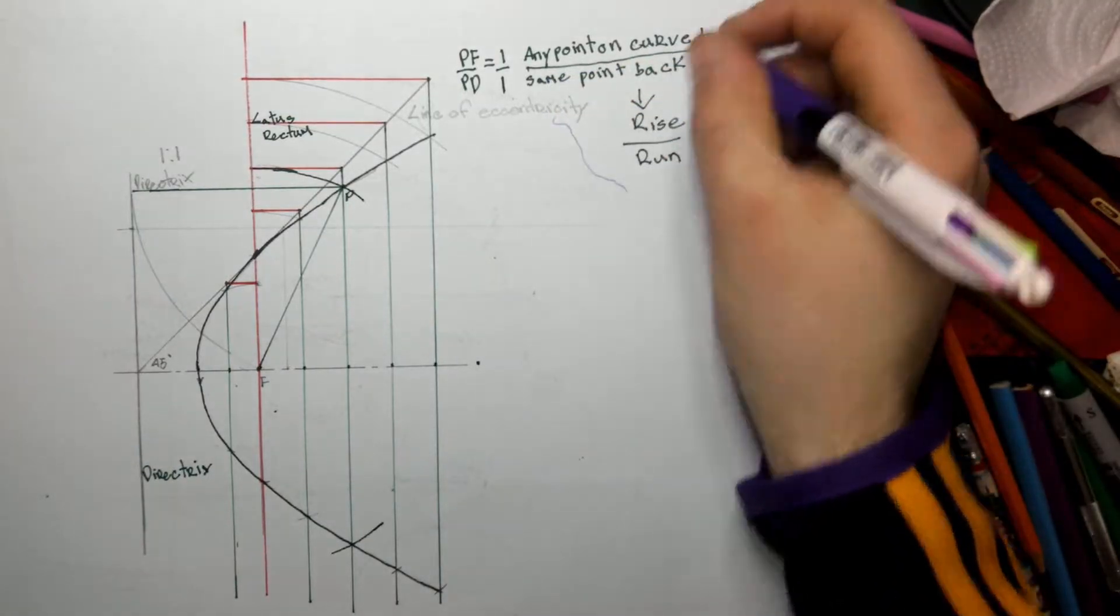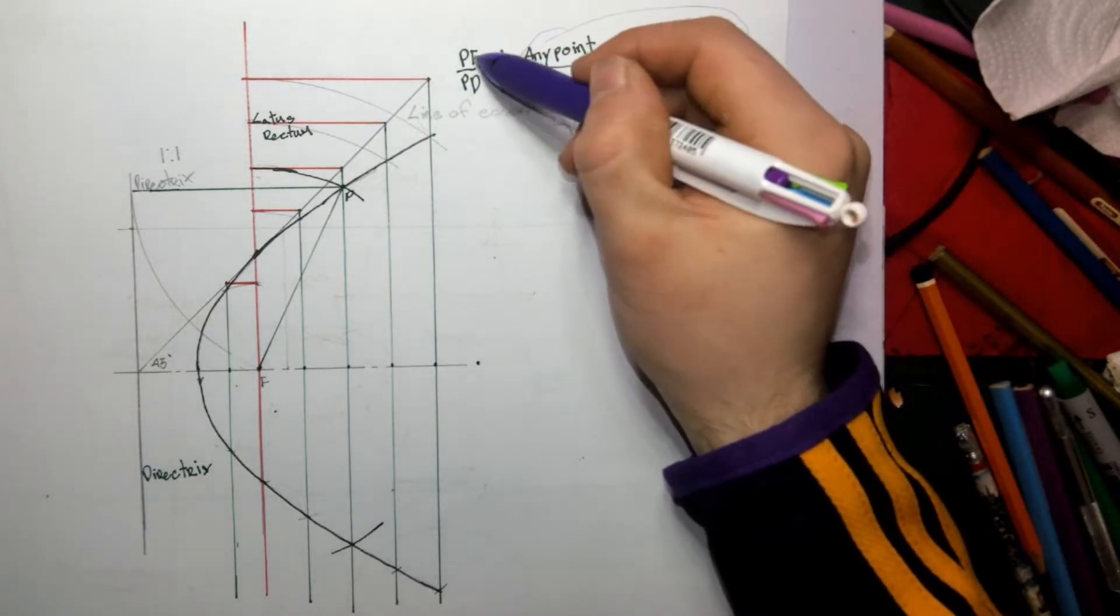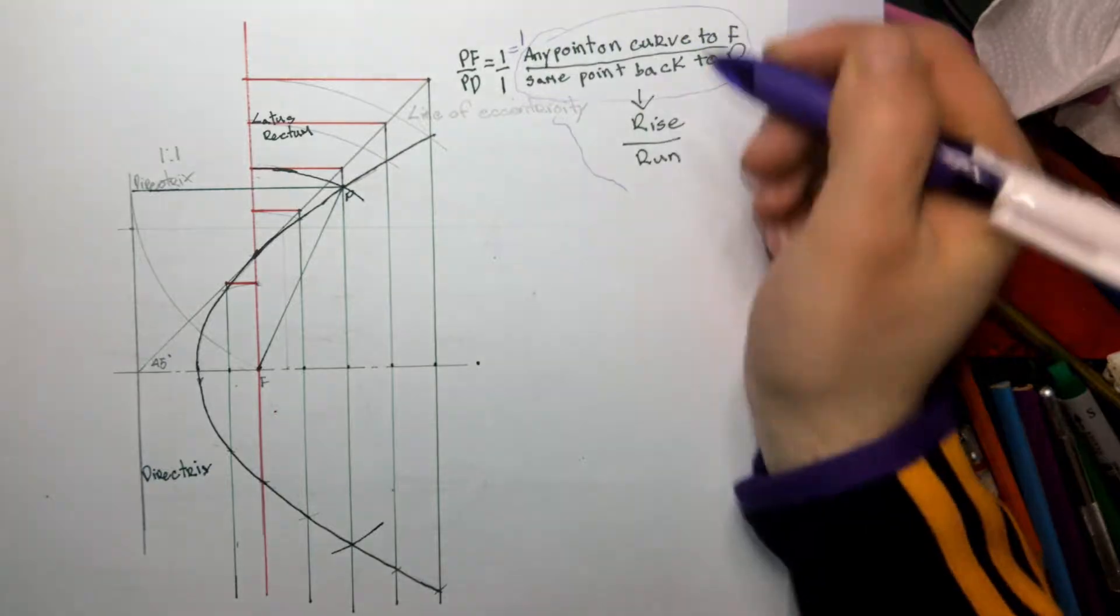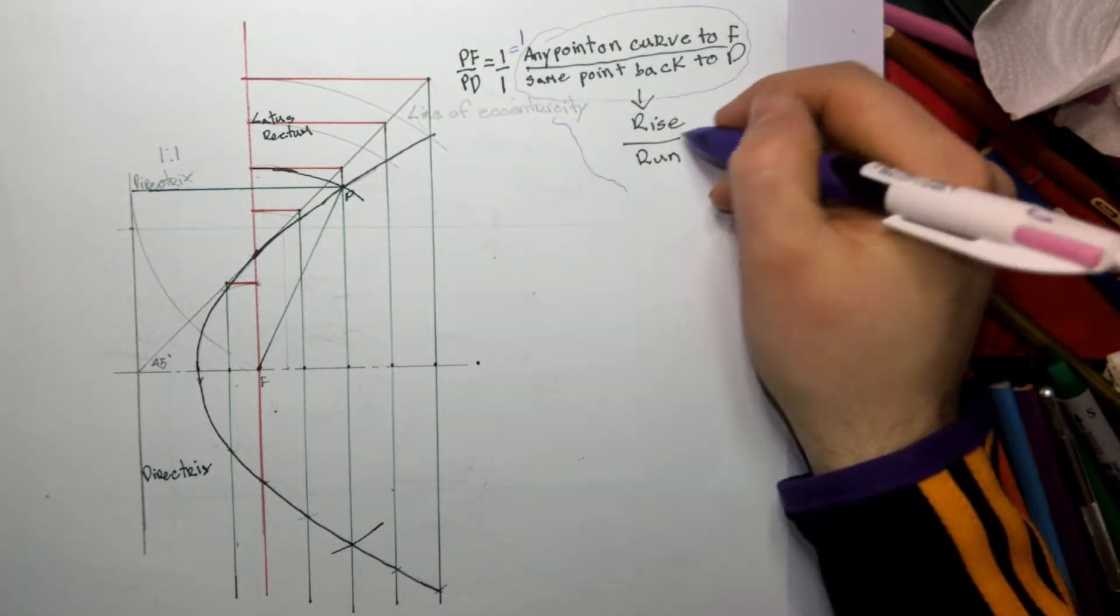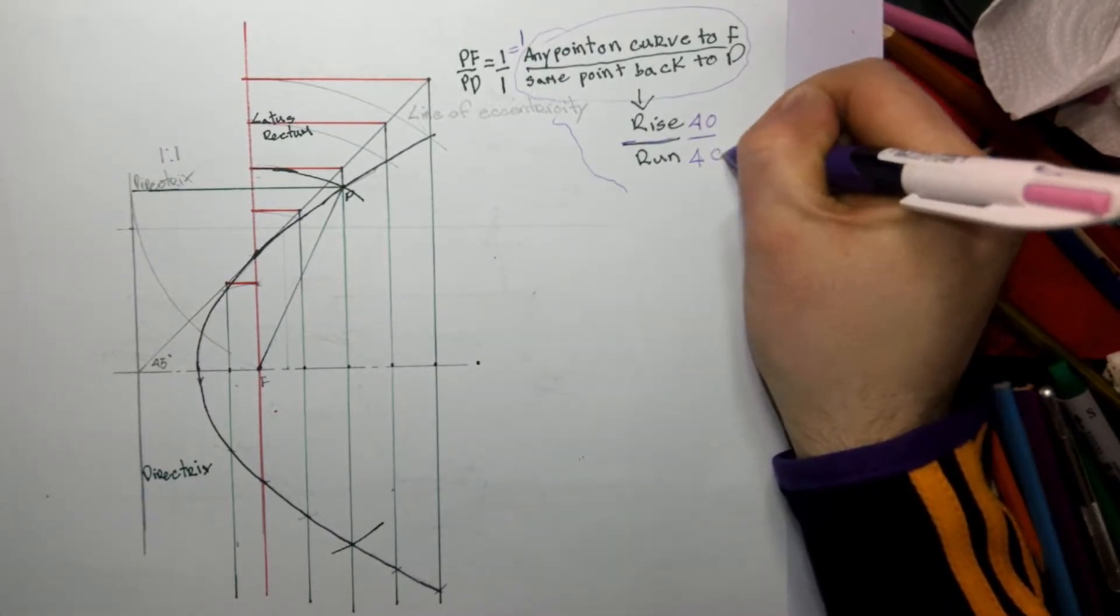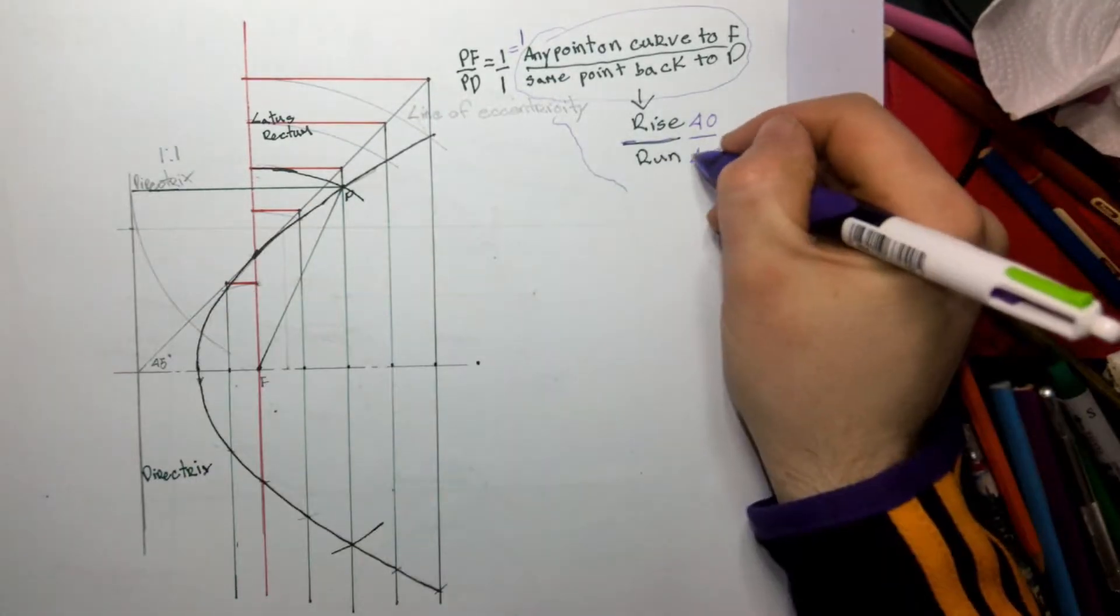The slope of the line is the same as this formula. For a parabola, PF is equal to one and PD is equal to one, so it's one as a fraction. That means PF is equal to PD, so the slope of the line, the rise over the run, these two values are equal. It could be four, the rise of the line could be forty up, and the run is the same.